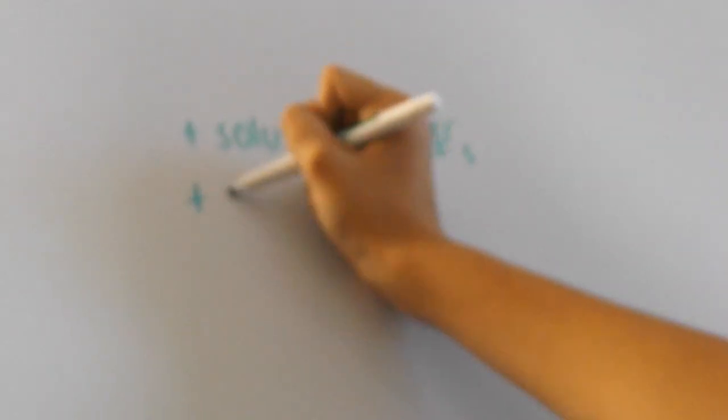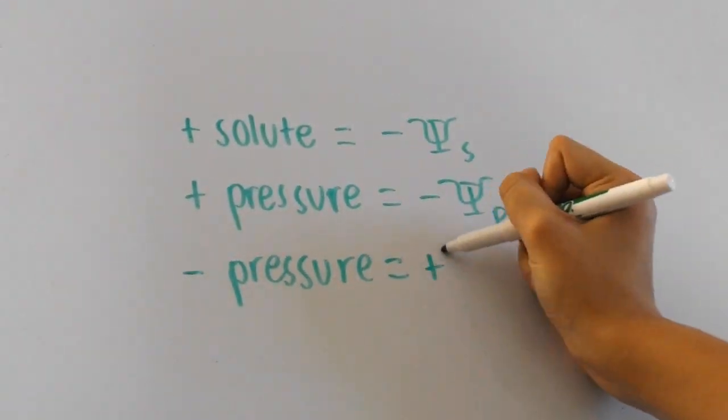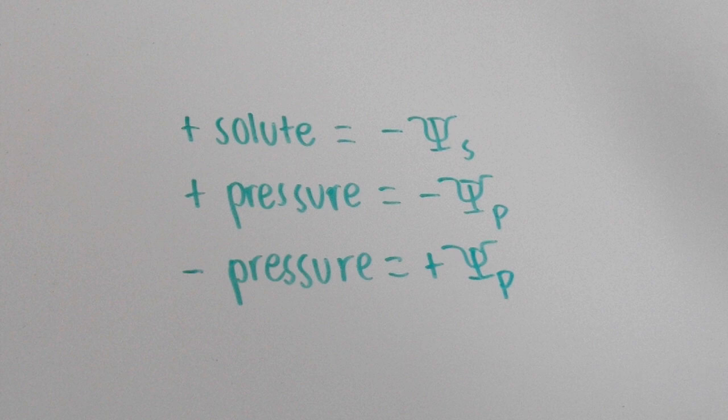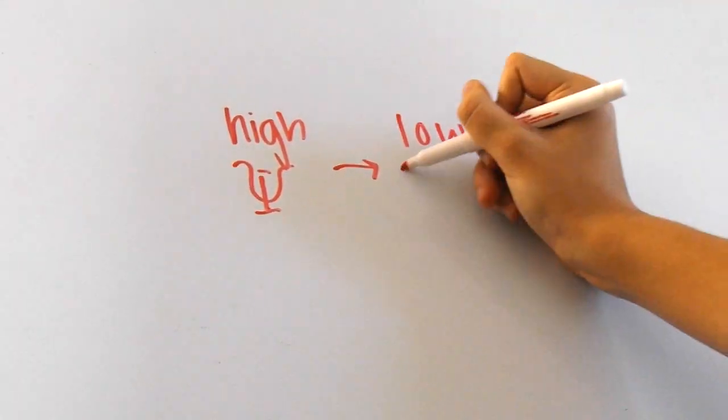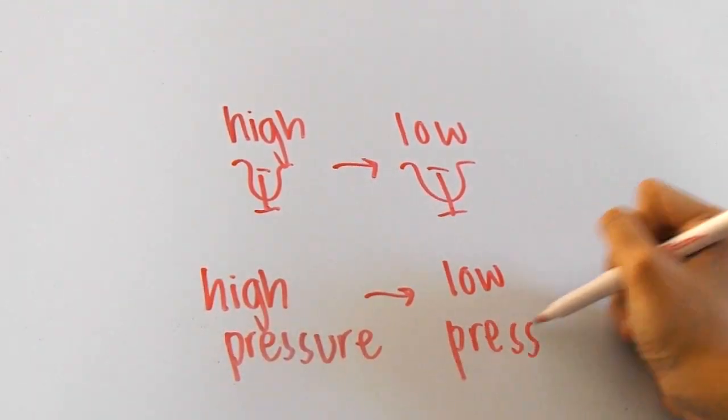Alright, I hope that helped you better understand the water potential formula. Remember, adding solutes decreases solute potential. Adding pressure decreases pressure potential too, but taking away pressure increases pressure potential. Finally, water always moves from higher to lower water potential and higher to lower pressure. Thanks for watching and be sure to check out my other videos.